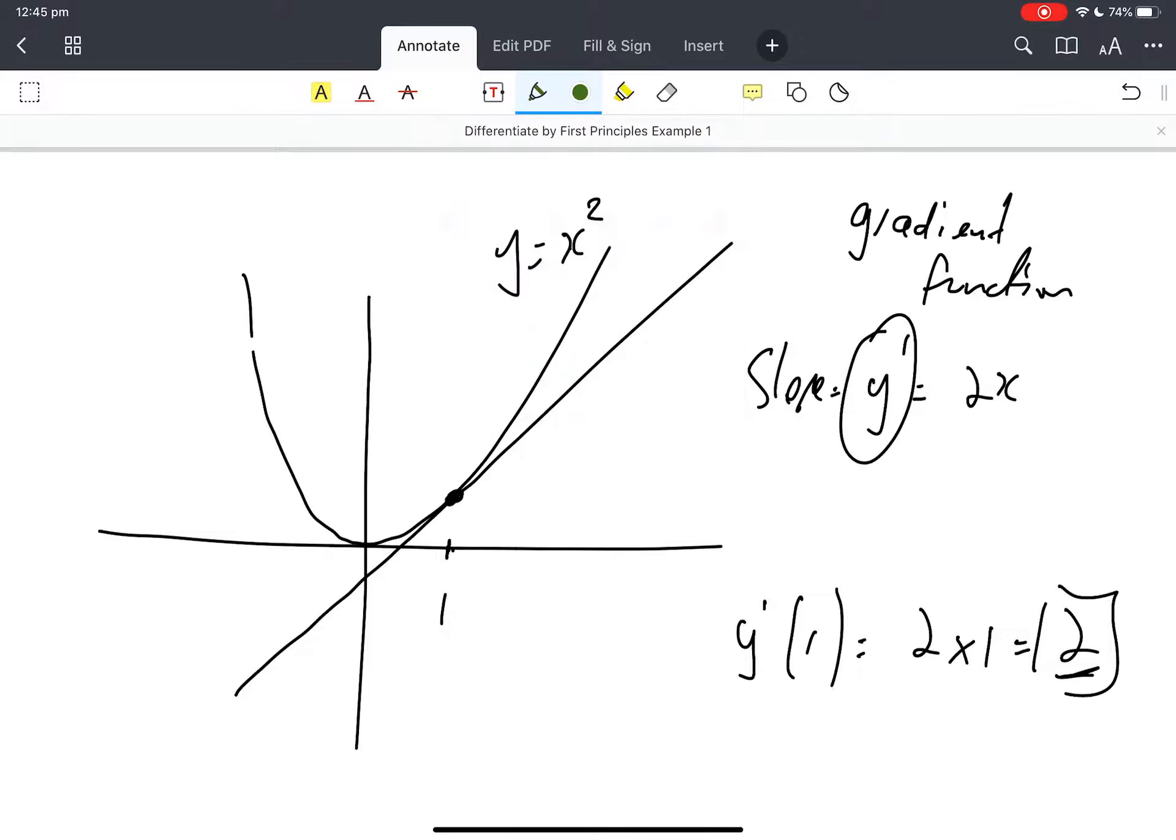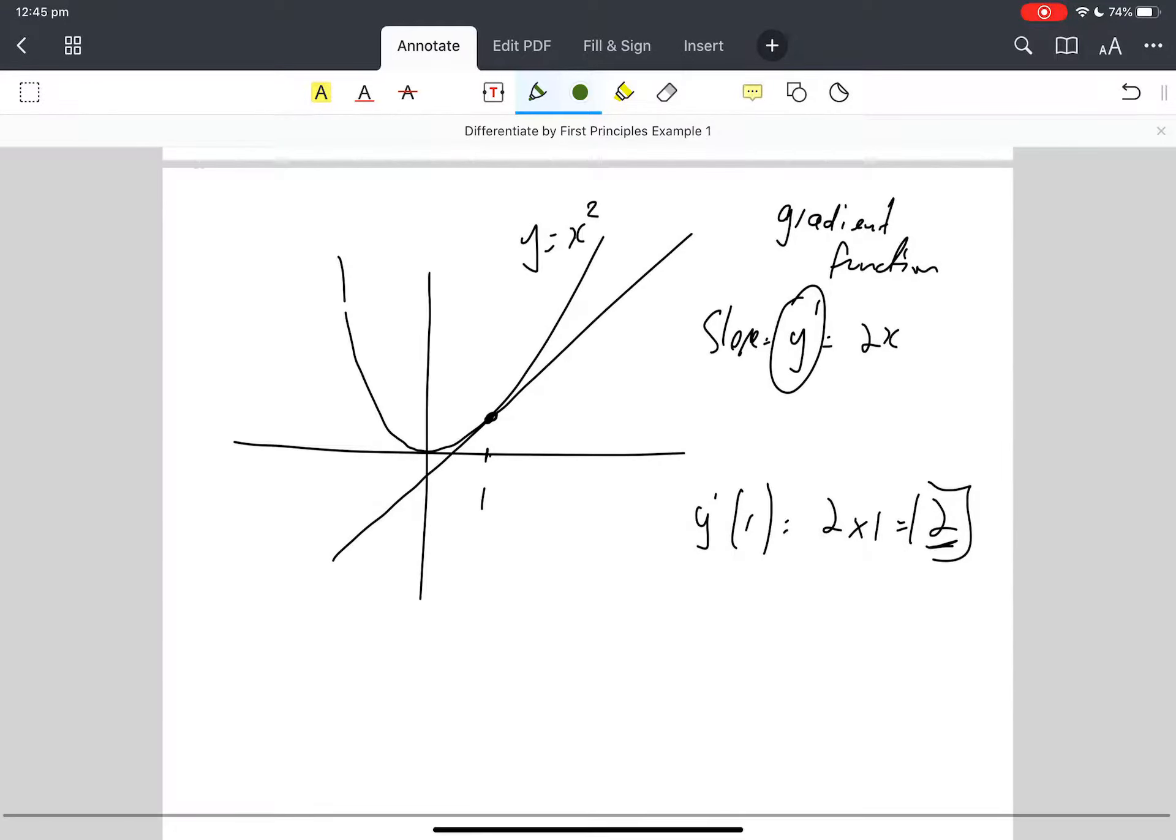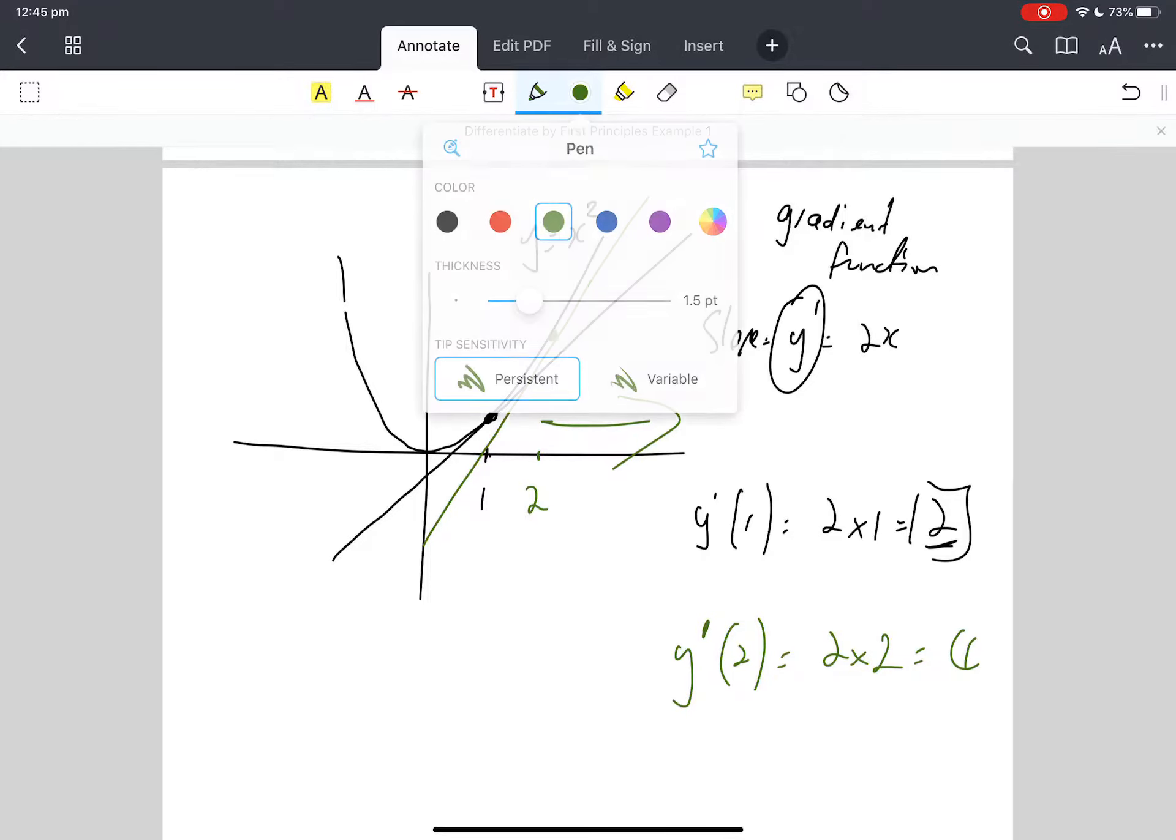We're going to get a bit messy. Let's do another one. So let's pick a number, 2. The slope where x is 2 is 2 times 2, because I'm setting that x equal to 2, which is 4. Oh my gosh, does it make sense that the further out this way I go, the steeper it gets?